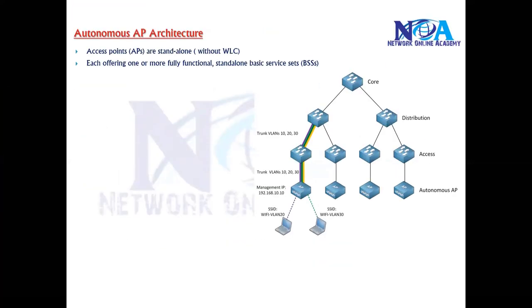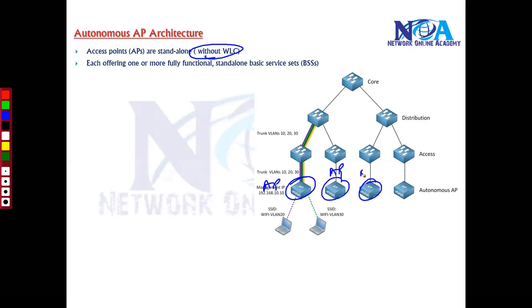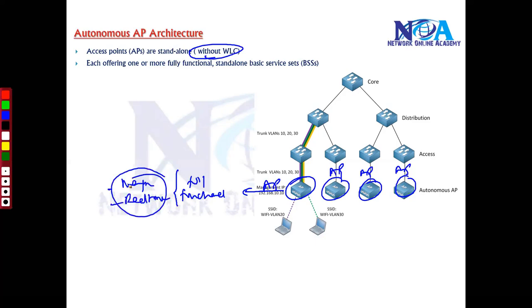So first we'll get into more detail about how the autonomous access point architecture works. The main basic point is we don't have a WLC, so all the access points provide connectivity to the wireless users. They do the same job, and at the same time they also have full functionality — meaning all management-related options and any kind of real-time traffic is managed by the access point itself. You need to manage each and every access point separately.